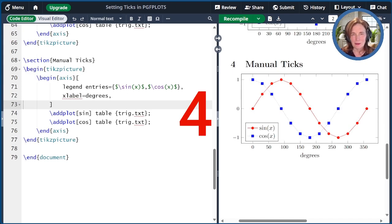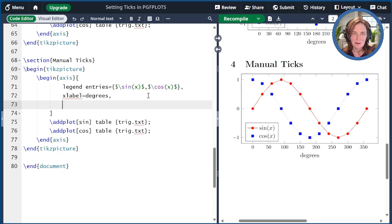The fourth way to set the tick labels is to manually type them out. In this case, I could set the ticks to be 0, 60, all the way up through 360 by typing this command x tick equals 0, 60, dot, dot, dot, 360. Notice that I'm using dot, dot, dot. Pgfplots is able to figure out the pattern.